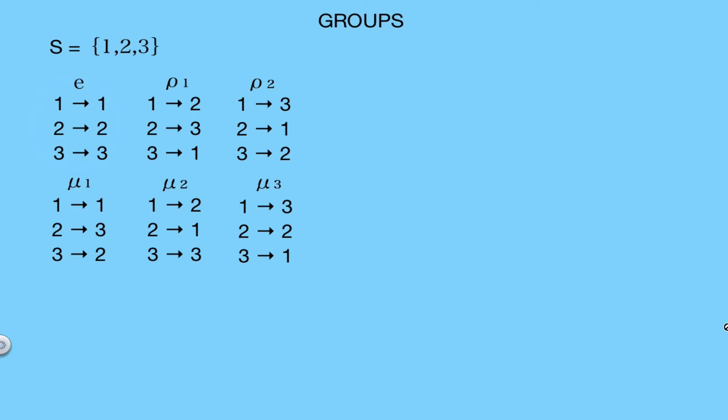If we label the different permutations like this, where the first we will call E to represent the identity element, or the element that changes nothing, the second one we will represent by the Greek letter ρ1, the third by ρ2, and the last three by μ1, μ2, and μ3. Now using this notation, we can compose the operation table.